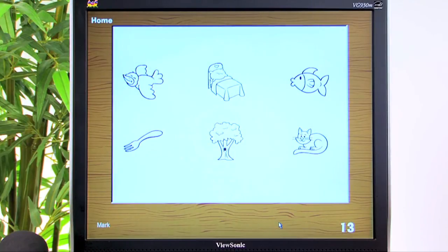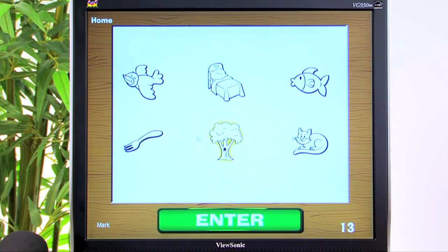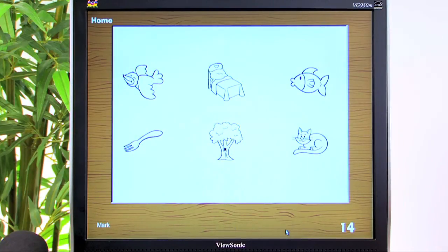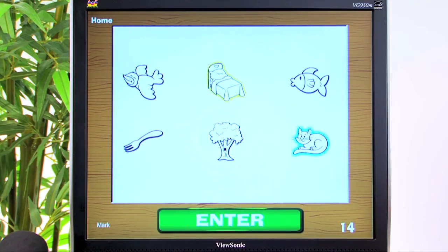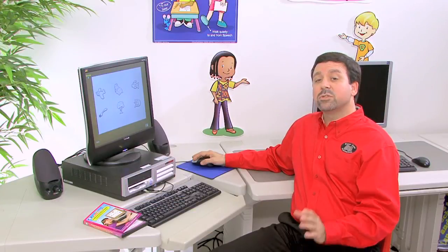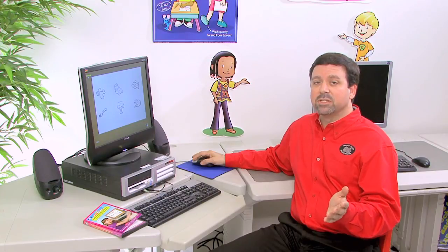First, click on the tree. Next, click on the fork. First, click on the bed. Next, click on the bird. And finally, click on the fish. So those are some examples from the Sequential Directions subtest.